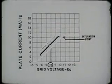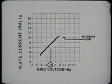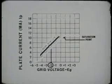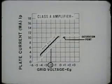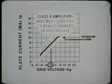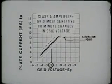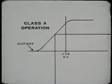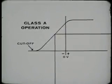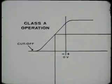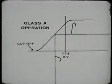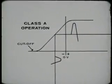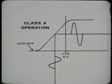If we apply the amount of bias which allows current to flow only within the linear portion, we are operating the tube as a linear amplifier — or as it is called, a class A amplifier. In this type, the grid is most sensitive to a minute change in grid voltage. When operating a tube as a class A amplifier, make sure that the signal voltage does not drive the tube beyond the limits of the linear portion of the curve. This will avoid distortion.